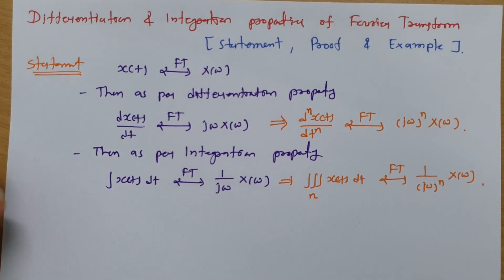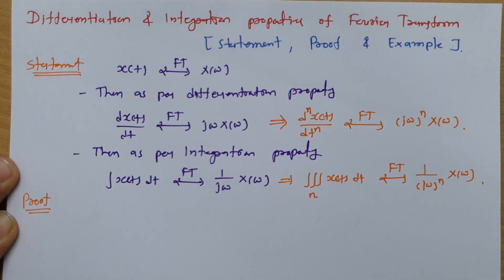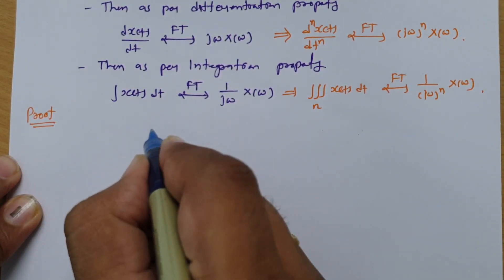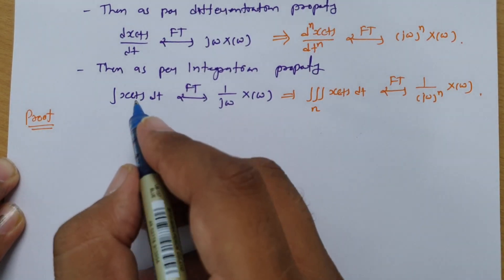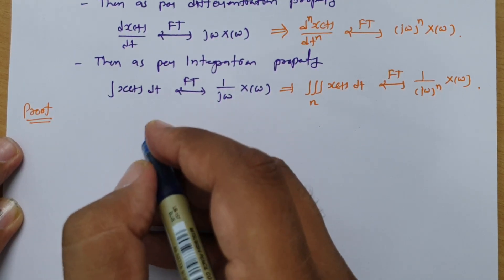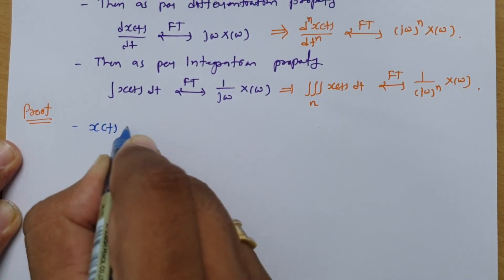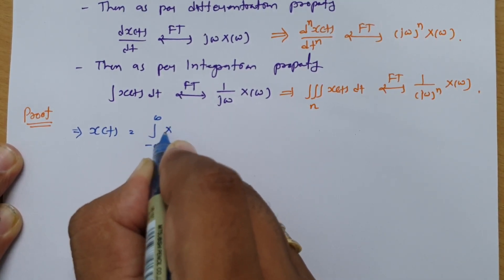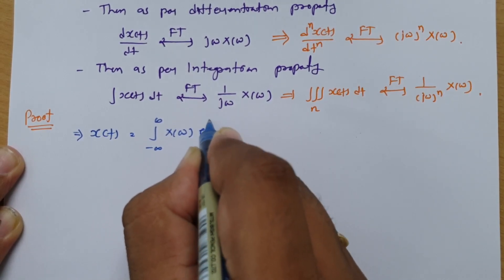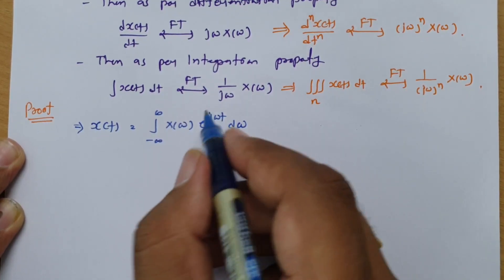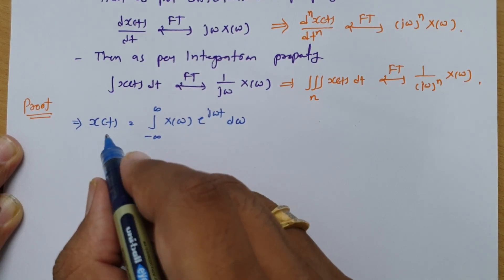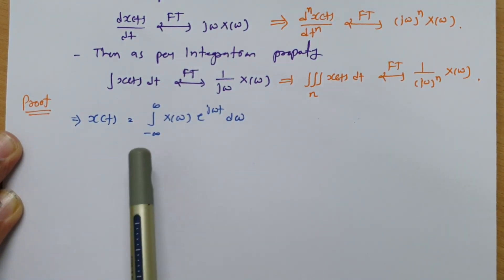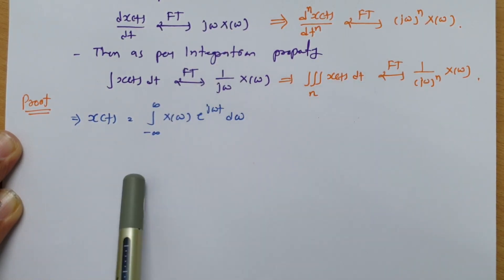Now let us derive these properties. We start with the inverse Fourier transform formula: x(t) equals the integral from minus infinity to infinity of X(ω)·e^(jωt)·dω. This formula gives us the original signal x(t) from X(ω), and we will use it to derive both the differentiation and integration properties.